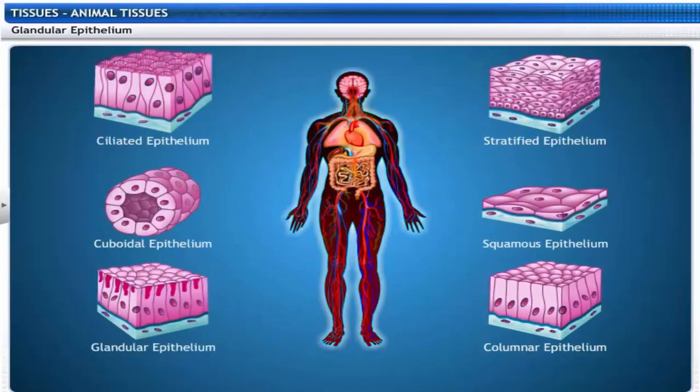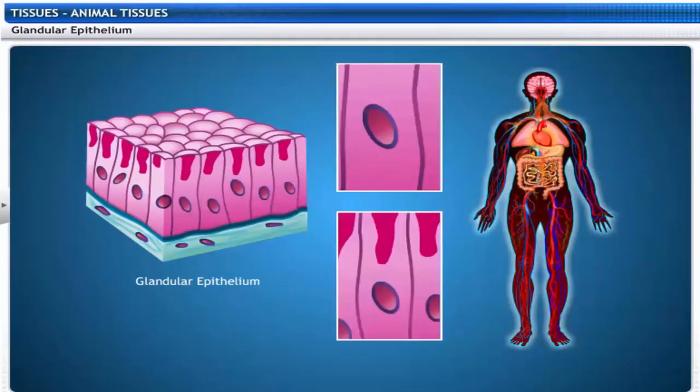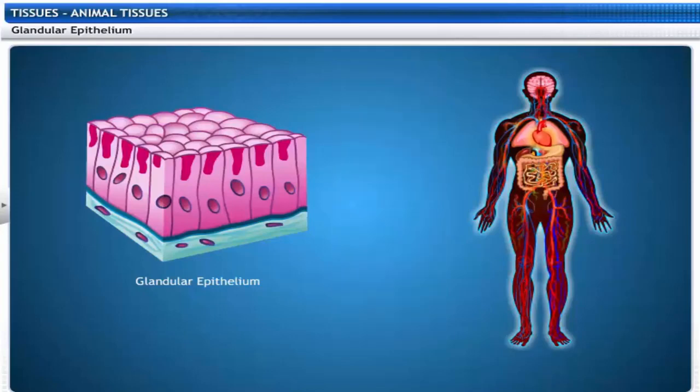This is glandular epithelium. When columnar epithelial cells modify as gland cells and secrete substances at the epithelial surface, they form glandular epithelium. These are found in the sweat glands and tear glands and produce secretions.